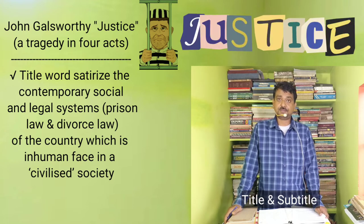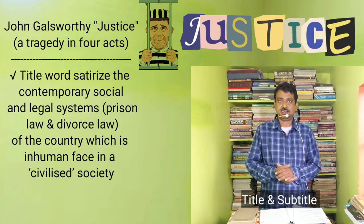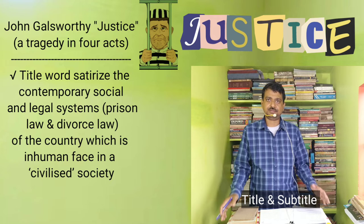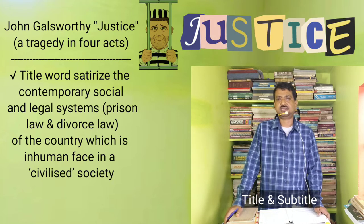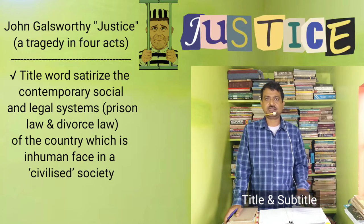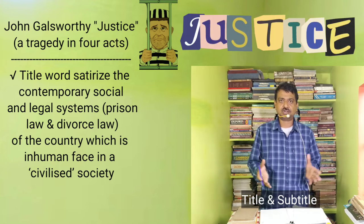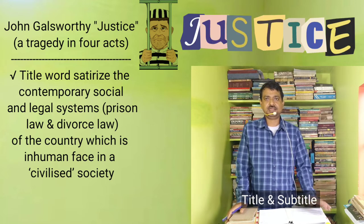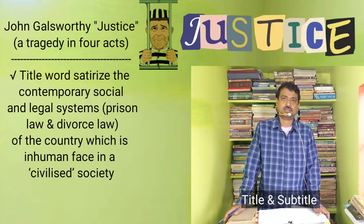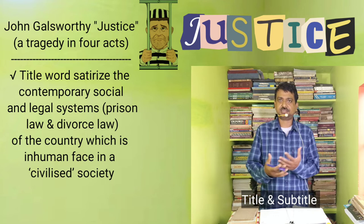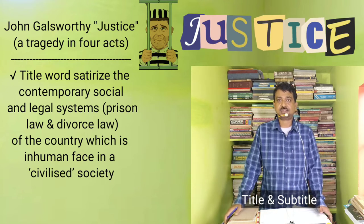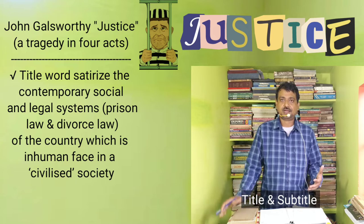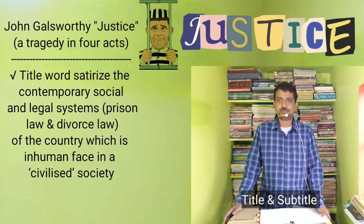From the literary point of view, the subtitle of the drama is 'a tragedy'. However, whether it qualifies as a social tragedy in the Aristotelian view is debatable. 'Justice' differs from tragedies written in the Aristotelian formula — there is no conventional hero-villain conflict. The central protagonist Falder is not a heroic figure; rather he is of weak-willed and nervous personality. The place of the villain has been taken by the inhuman social and legal systems, making this a social tragedy rather than a Greek-model tragedy.